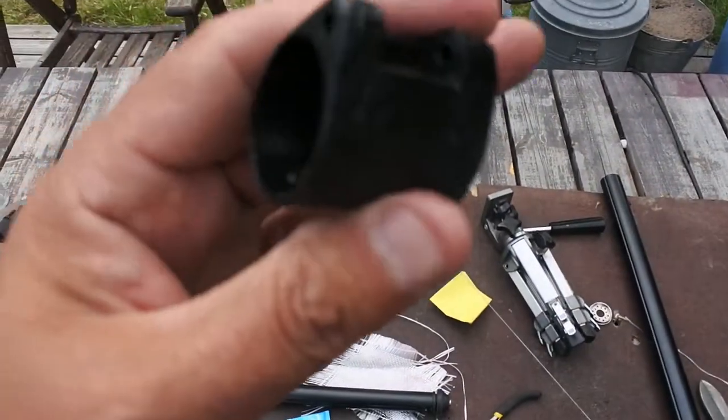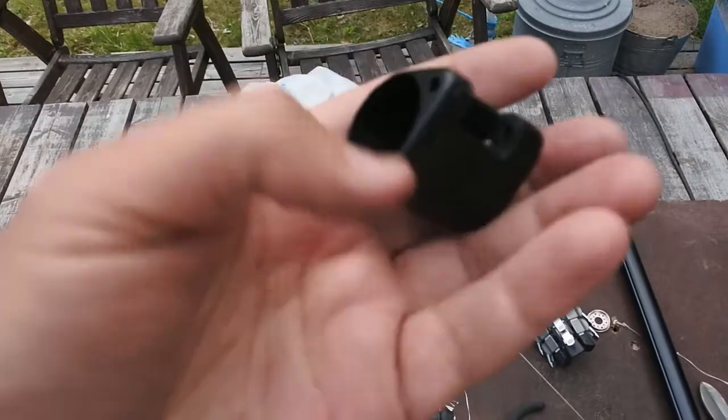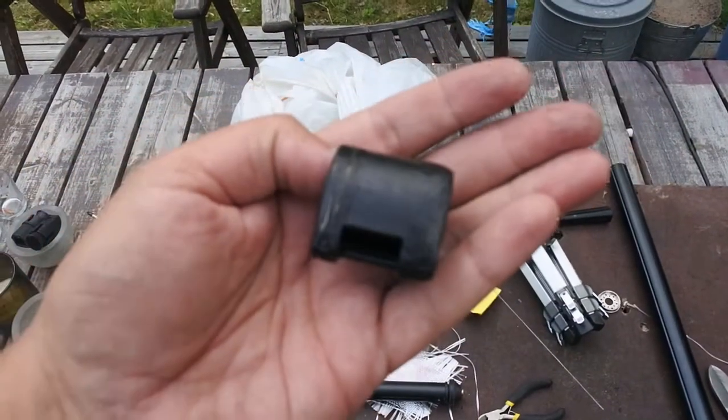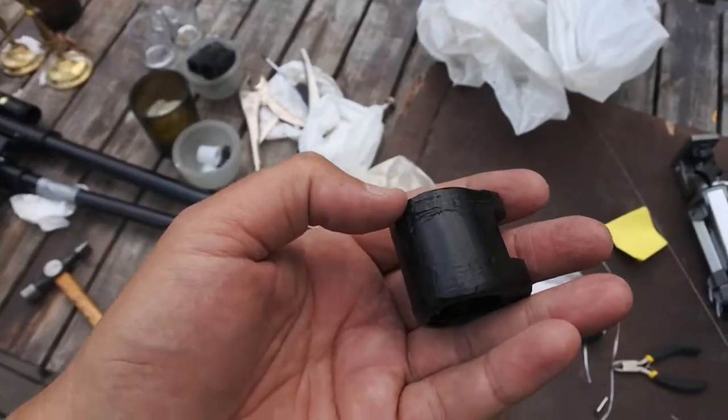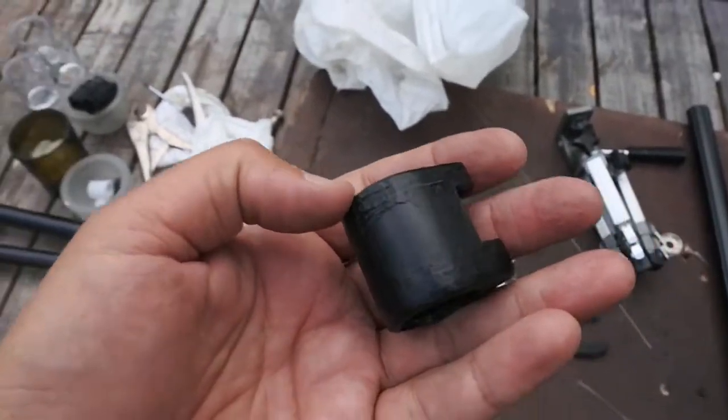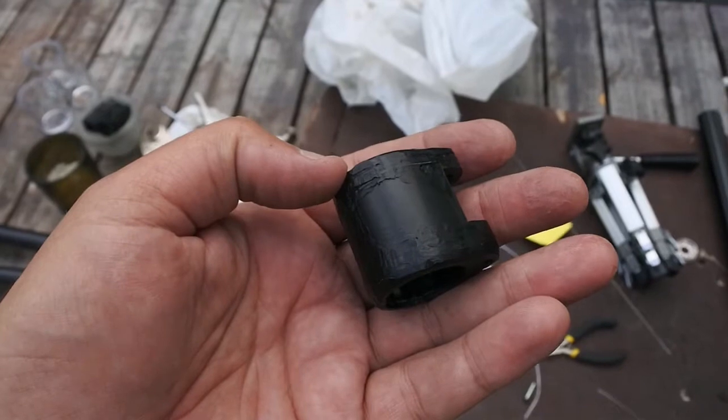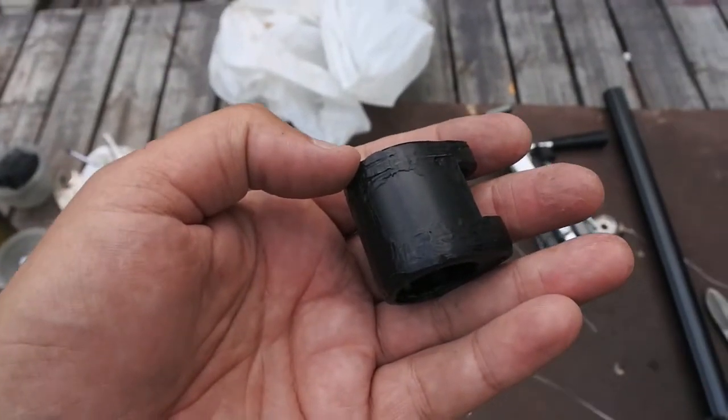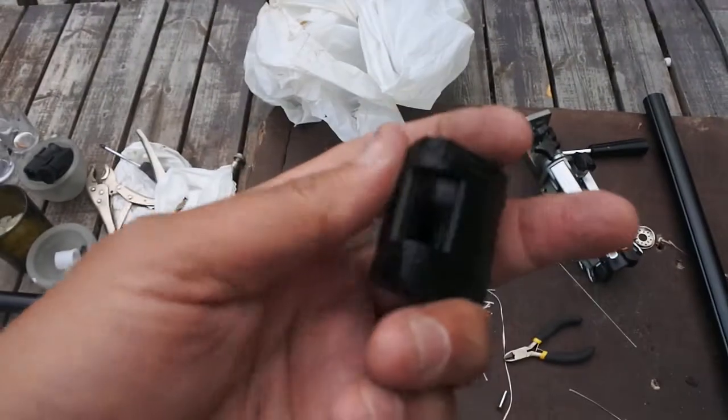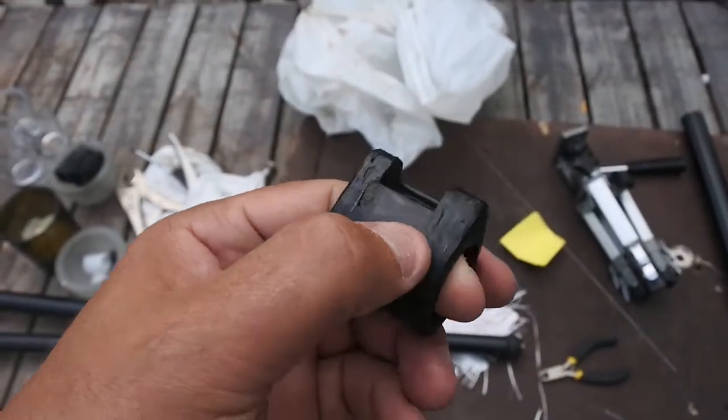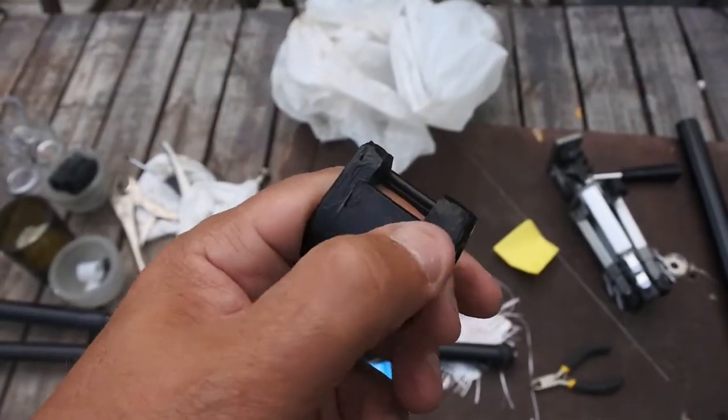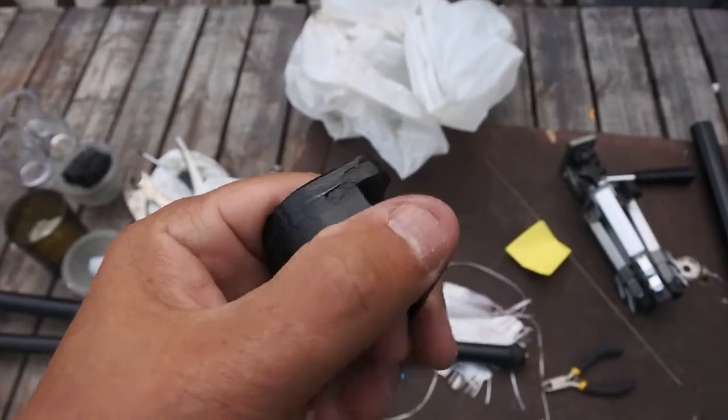These clamps—two on each leg—I'm basically trying to reinforce by winding glass fiber around the edges and melting it to bond with the plastic.